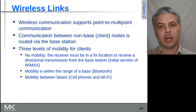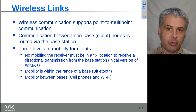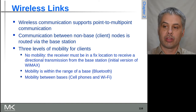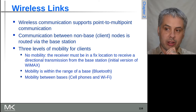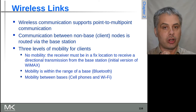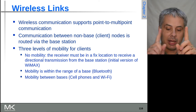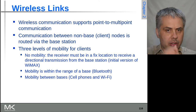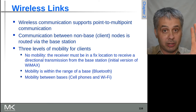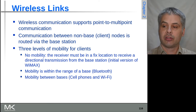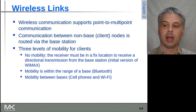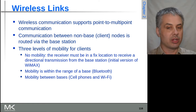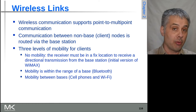Depending on the style of network, there are different levels of mobility. You might have no mobility at all, where the receiver has to be in a fixed location to receive a directional transmission. That directional transmission may be formed by multiple antennas working to focus in a particular direction, or you might have a dish actually pointed at you to receive at that location.